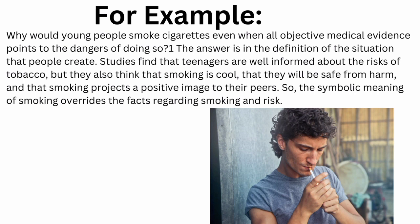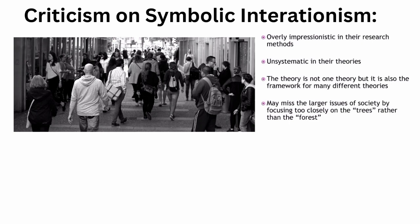According to symbolic interactionism, social order is possible because people learn what various symbols — such as a handshake — mean and apply these meanings to different kinds of situations. If you lived in a society where sticking your right hand out to greet someone was interpreted as a threatening gesture, you would quickly learn the value of a common understanding of symbols. In a nutshell, symbolic interactionism is a perspective that sees society as a product of shared symbols such as language. The social world is constructed by the meanings individuals attach to events and social interactions, and these symbols are transmitted across generations through language.